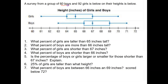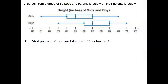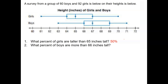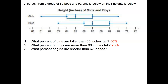On the screen, I tell you that there are 60 boys and 92 girls, and I want you to answer seven questions. What percent of girls are taller than 65? That's the box and whisker, so 50%. What percent of boys are taller than 66? That's this box, that box, and that whisker, so 75% because each box and whisker is 25%. For girls taller than 67, it's also that box, that box, and that whisker — so again 75%.